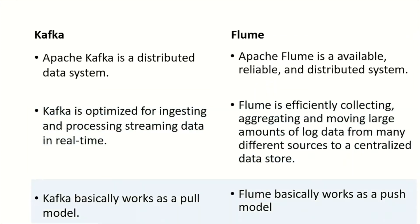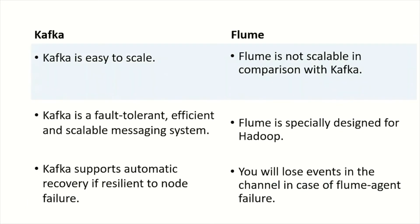Kafka basically works as a pull model, whereas Flume works as a push model. Kafka is easy to scale and highly scalable, whereas Flume is also scalable but not as scalable as Kafka. Kafka is a fault-tolerant, efficient, and scalable messaging system, whereas Flume is specially designed for Hadoop data.